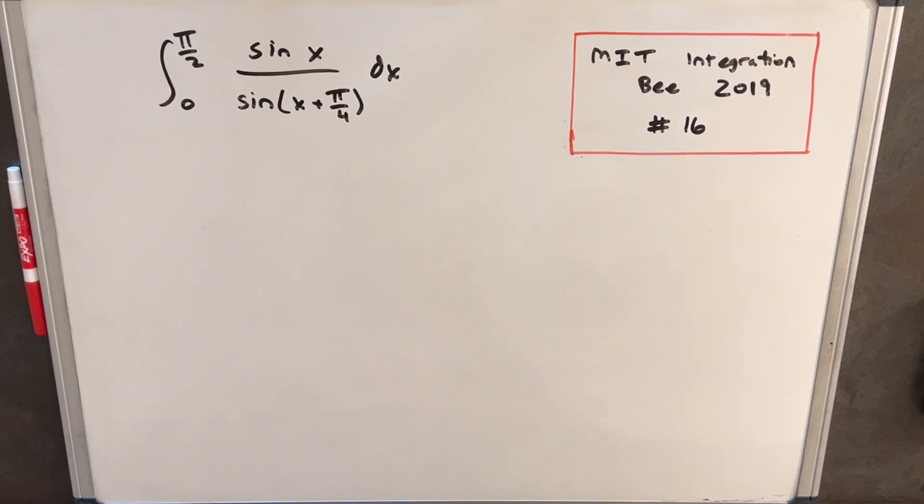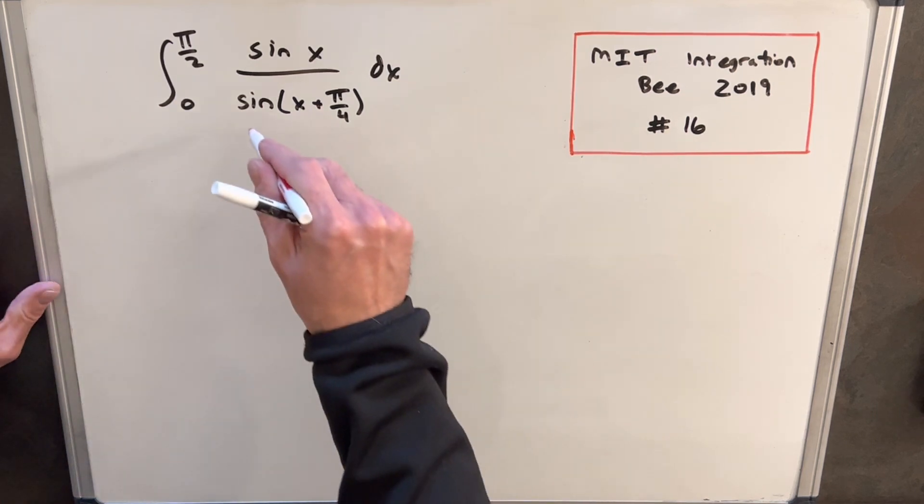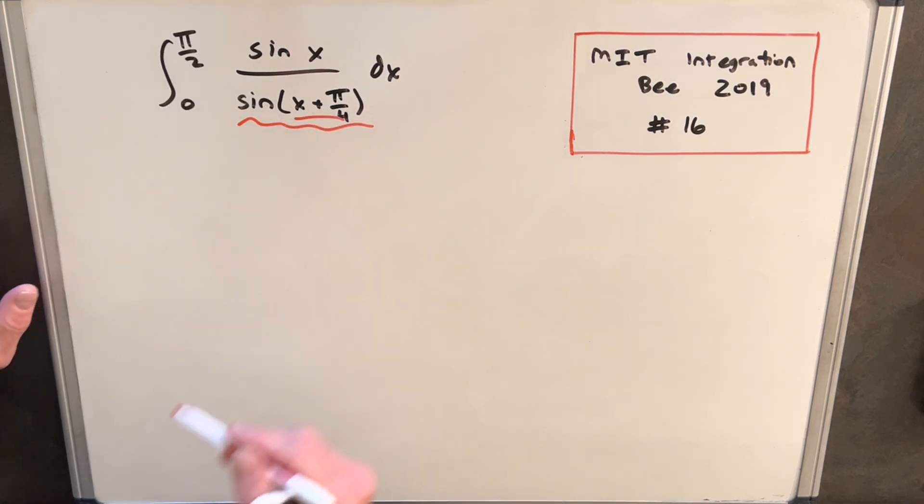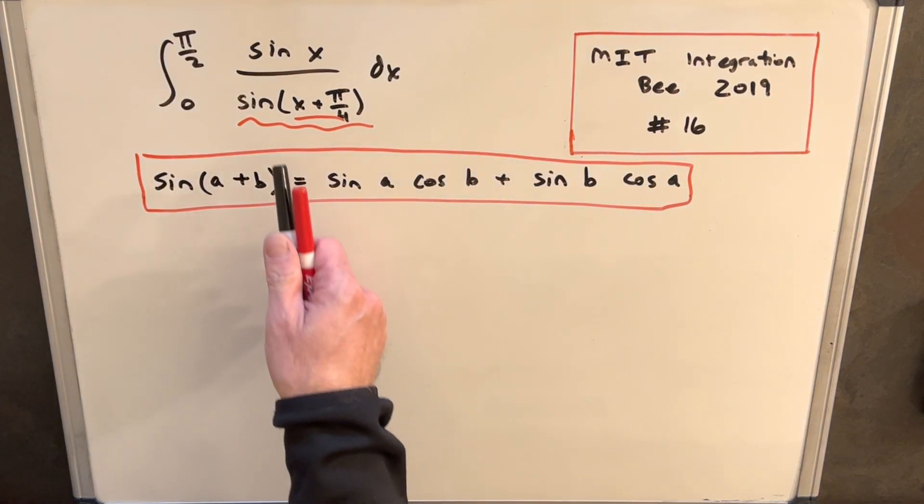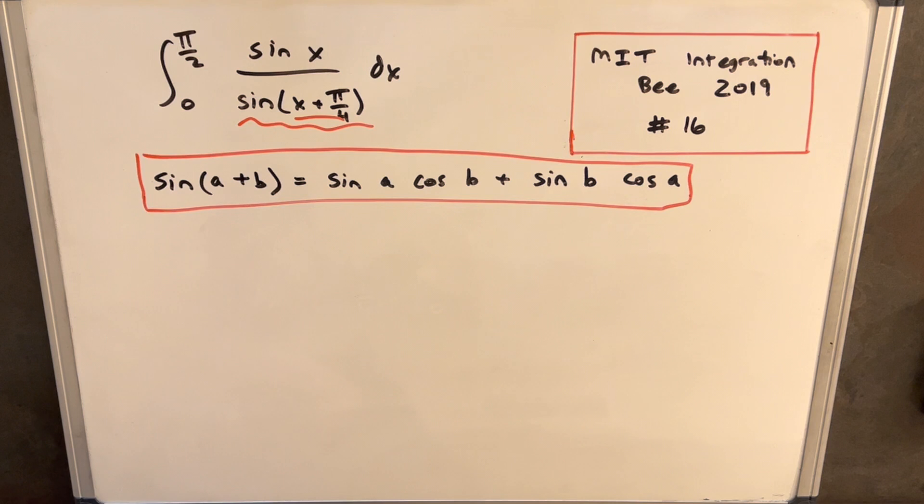This is actually an integral that can be done really quickly with a few tricks, so let's go over that. What I want to start with is let's look at this denominator. We have a problem with the angle being different than what we have in the numerator, so let's see what we can do to simplify that. What I'm going to do is use this formula, and I think it's going to allow us to simplify the denominator pretty nicely.